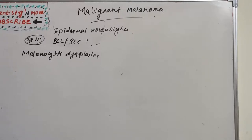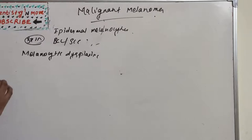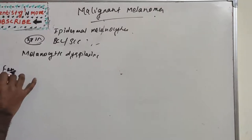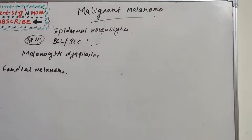Certain lesions considered to be pre-malignant melanomas are: acral nevi, dysplastic nevi, congenital nevi, and cellular blue nevi. Etiological environmental factors include sun exposure, artificial UV sources, socioeconomic status, fair skin, red hair, and number of melanocytic nevi. Genetic factors include familial melanoma and xeroderma pigmentosa.